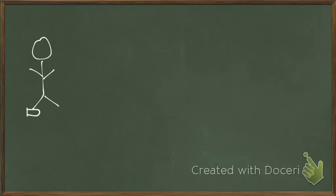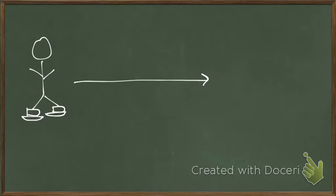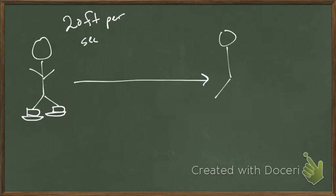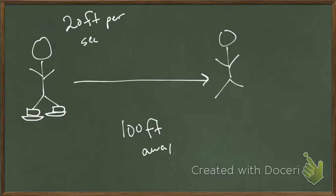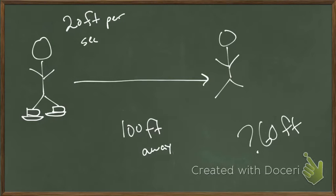Here is a picture. This is you — it looks like you're standing on boats, but these are ice skates. You're skating in this direction at 20 feet per second. And here's your friend, who is 100 feet away. I want to know how many seconds until you are 60 feet away from your friend.